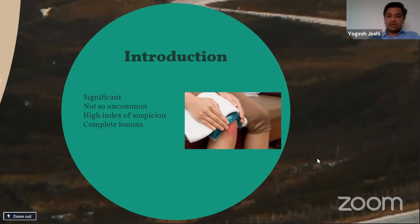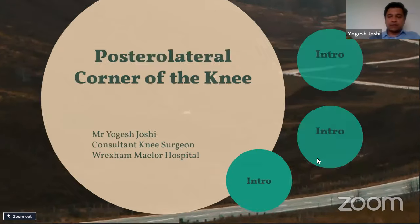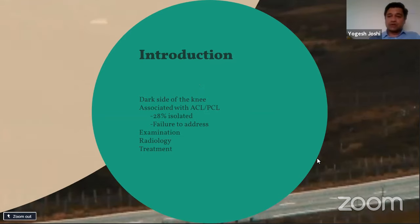PLC injuries are not uncommon. They are present along with other injuries like ACL or PCL injuries. They can be subtle, and hence there has to be a higher index of suspicion, because if you neglect these injuries, the primary repair to any other ligament reconstructions — especially ACL reconstruction — will fail. Complete lesions don't heal with non-operative treatment, so understanding the biomechanical importance of these structures is critical to knowing their prognosis.